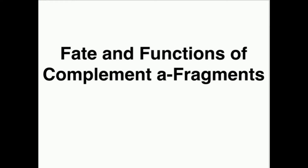An anaphylatoxin is something that basically is going to promote inflammation. This is a summary slide of the three primary anaphylatoxins: C3A, C5A, and C4A. We don't really consider C4A because although it can act as an anaphylatoxin, it's by far the weakest of those three. C5A is the strongest — it has the highest biological activity of all three — but C4A really doesn't have much activity and is very weak as an anaphylatoxin.